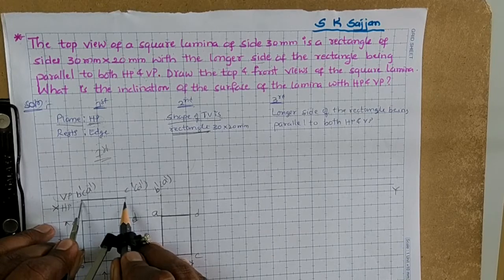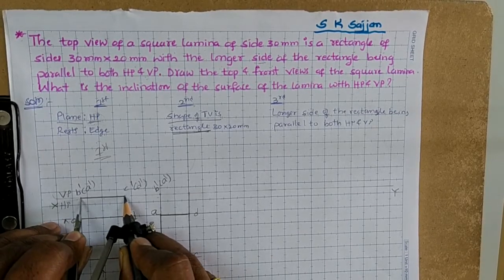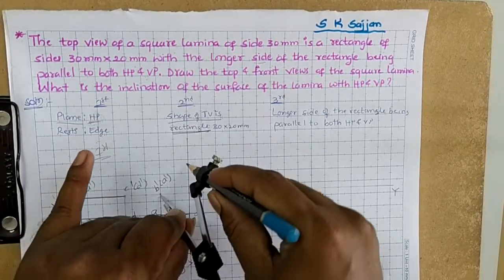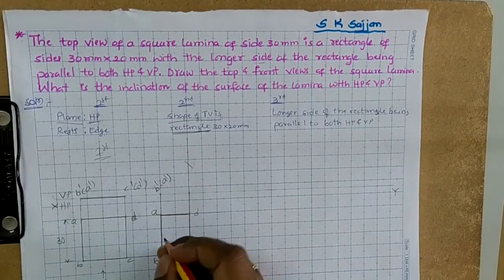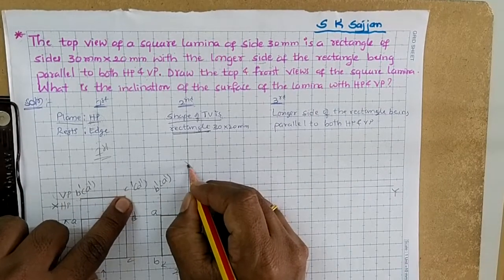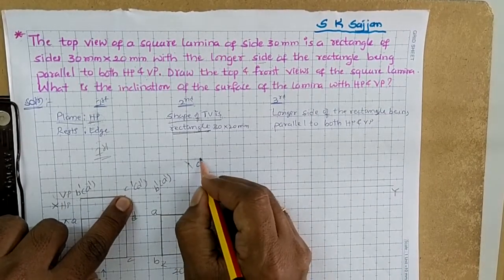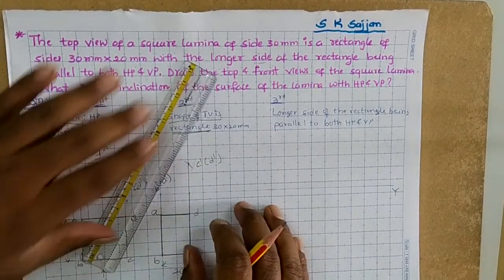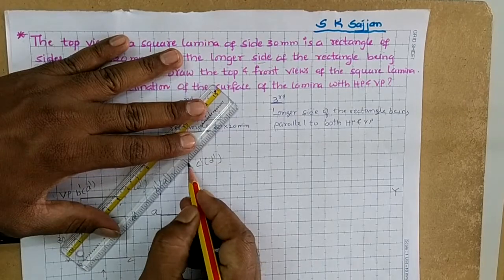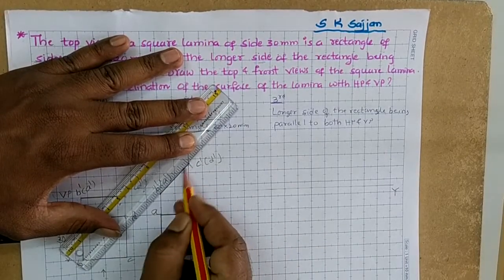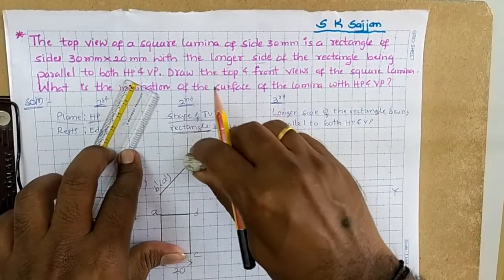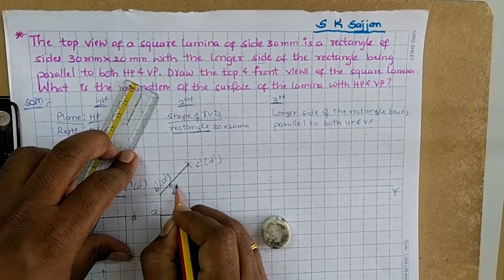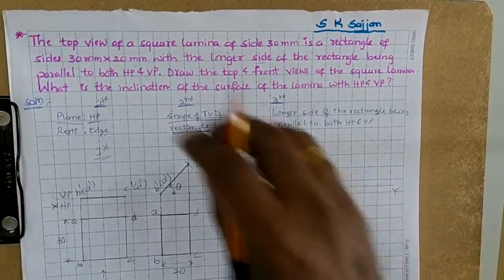Measure how much is the distance, and with that measurement cut this vertical line to get the point C' (bracket D'). Join these two points — this is the front view. Now measure the angle at this line: this angle is theta.